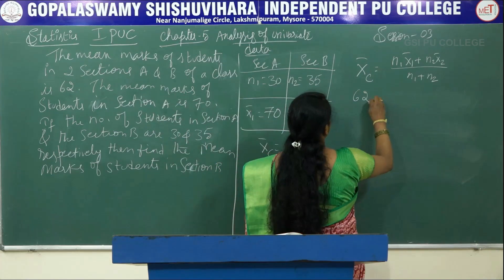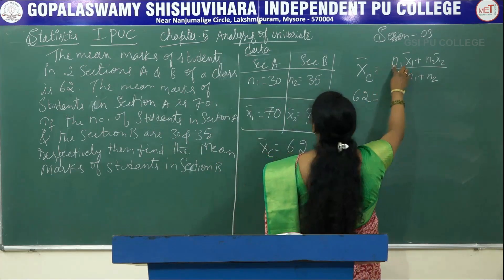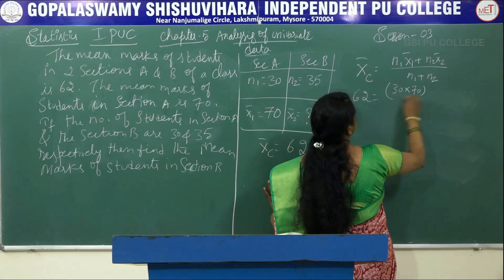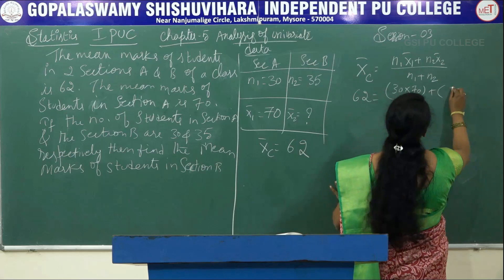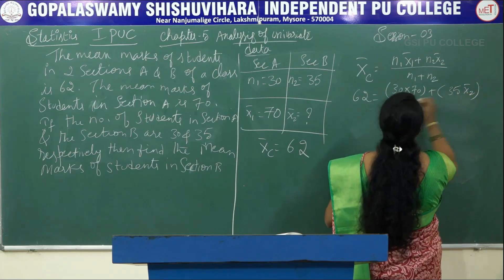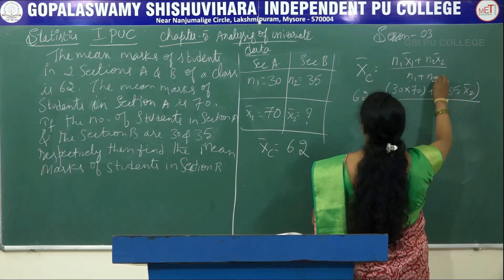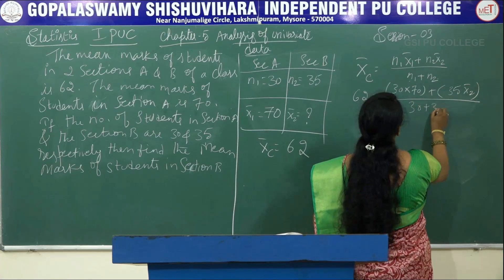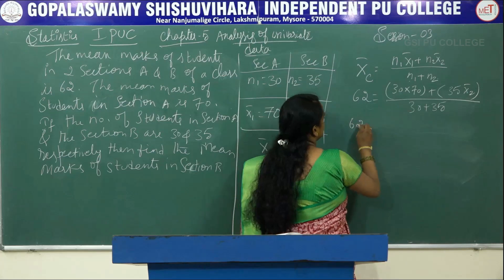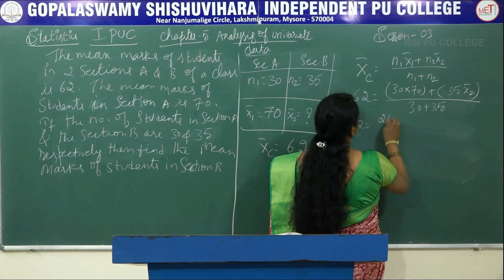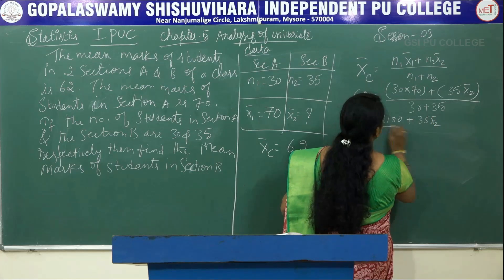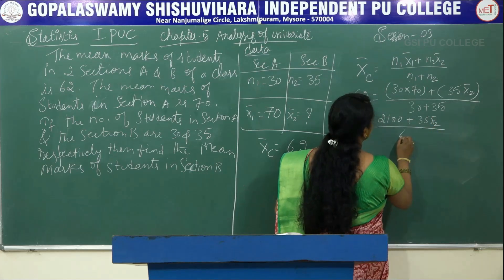Substituting: 62 = (30 × 70 + 35 · x̄₂) / (30 + 35). So 62 = (2100 + 35·x̄₂) / 65.